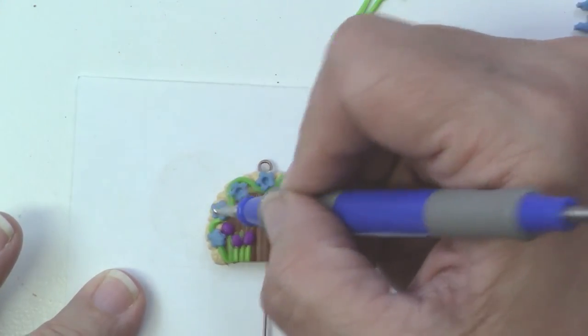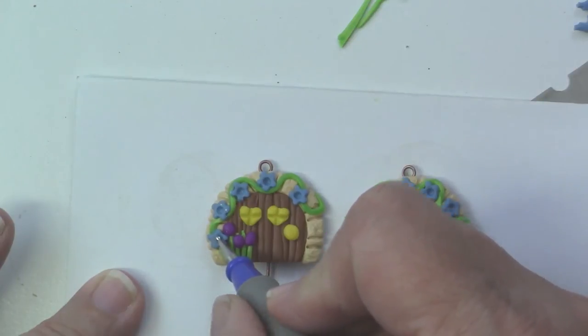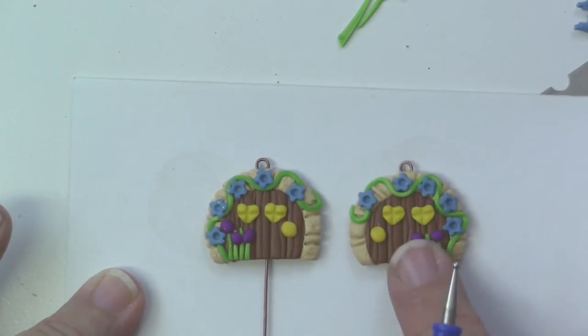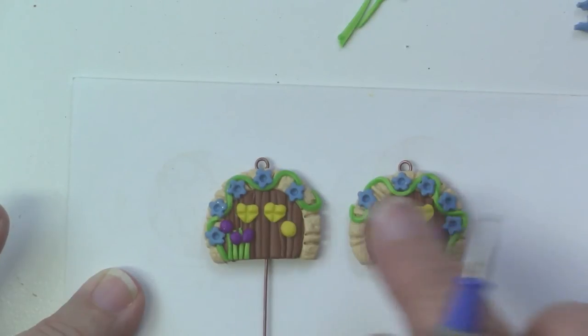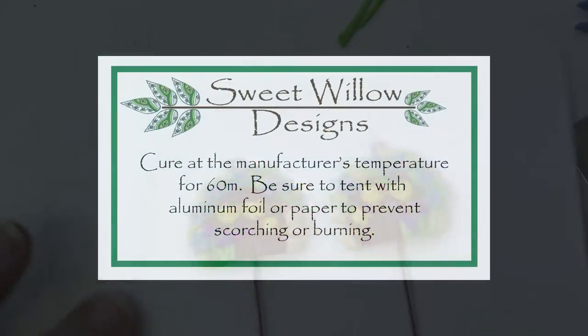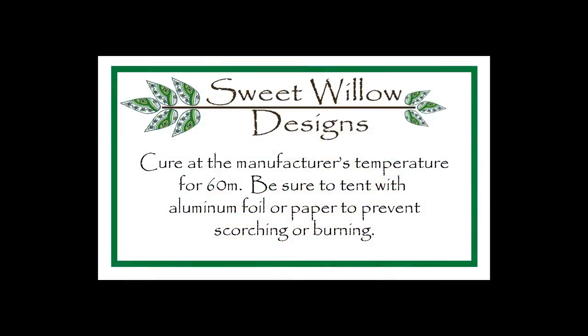You don't have to take that step. You could decide just to leave them as they are and not put any antiquing on. They would be just as cute. So now we get that in the oven for 60 minutes.